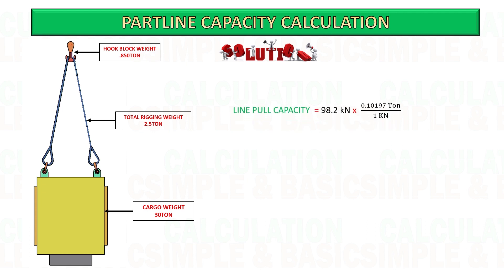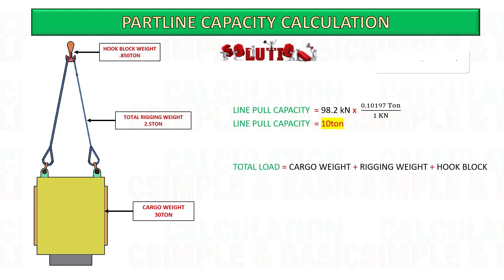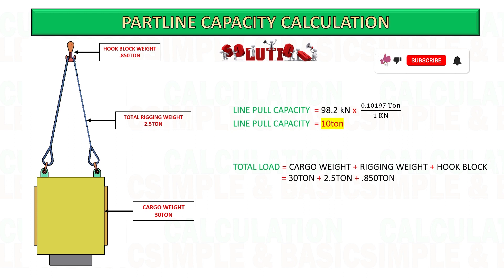Convert the kilonewton into ton by multiplying the kilonewton value by 0.10197 ton. Next, take the total load to be lifted by adding cargo weight, rigging weight, and hook block weight.